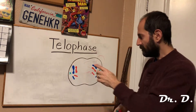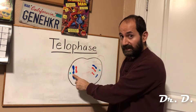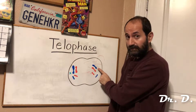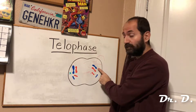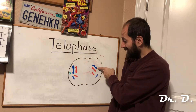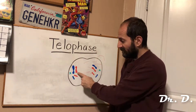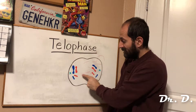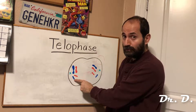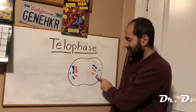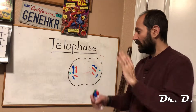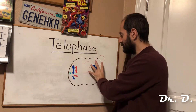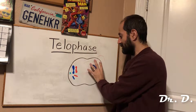So this cell has dad's chromosome 1, and this other developing daughter cell also has an exact same copy of that dad's chromosome 1. This cell has mom's chromosome 1, and this cell has an identical mom's chromosome 1. This cell has dad's chromosome 2, and this cell also has an identical copy. Whatever chromosomes are now in this developing daughter cell are also in this developing daughter cell.